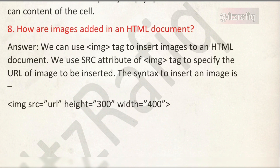How are images added in an HTML document? We can use the img tag to insert an image in a document. We use the src attribute of the img tag to specify the URL of the image to be inserted. The syntax for inserting an image is: img src equals URL in quotation marks. You can also add height and width attributes, though they are not necessary.